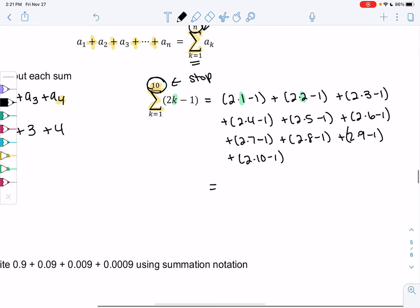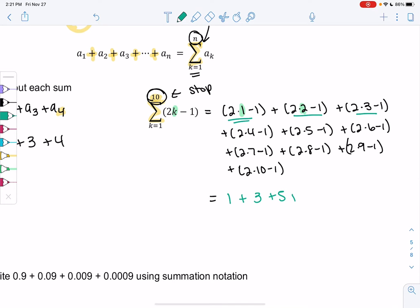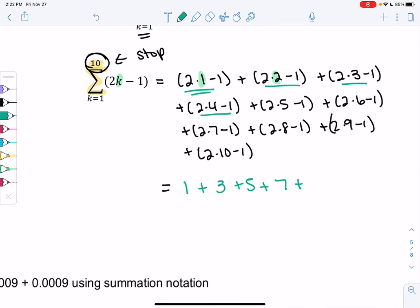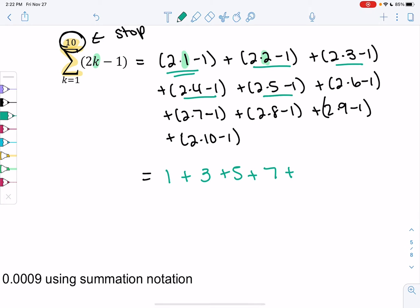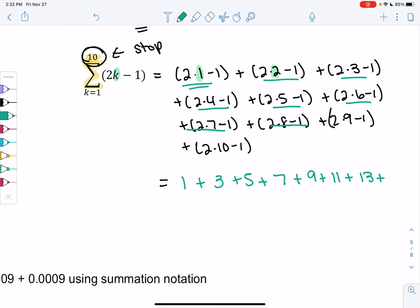So just simplify each individual term. So 2 times 1 minus 1 would be 1 plus 3, 4 minus 1. 6 minus 1 would be 5. 8 minus 1 would be 7. And you might be starting to notice a pattern. But if not, that's totally fine also. We get 10 minus 1, which is 9. 12 minus 1 is 11. 13. 16 minus 1. 17 or 15. 18 minus 1 is 17. And then my last term would be 20 minus 1 or 19. So that would be the sum.